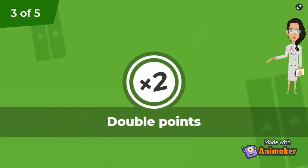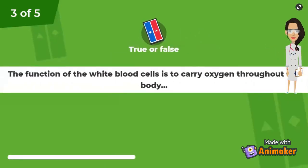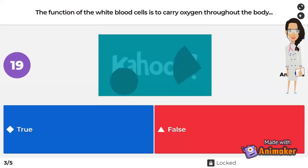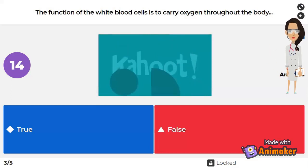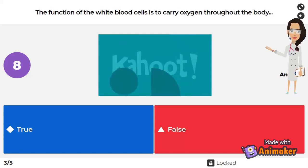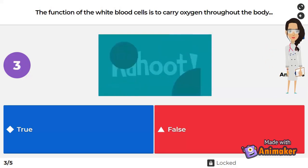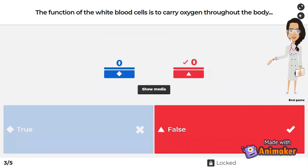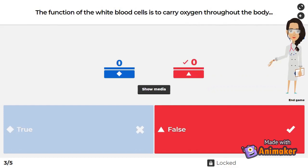Next question, true or false: the function of the white blood cells is to carry oxygen throughout the body. If you said false, that's correct! Because remember, the red blood cells carry the oxygen. The white blood cells help in fighting germs and allergies.